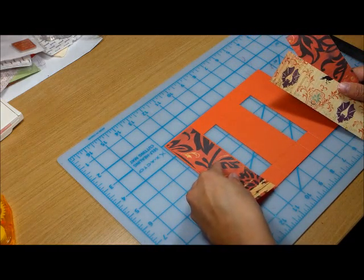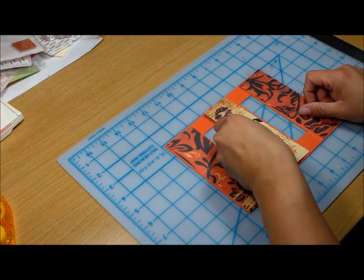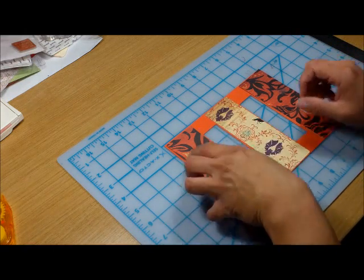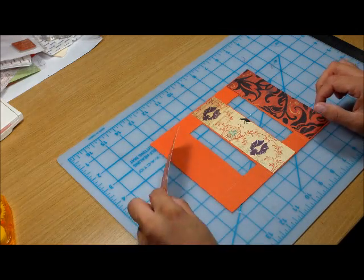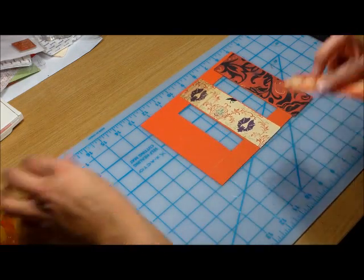So I cut a panel for here and here in the center. Keep in mind these score marks that we had here and here, they're just going to get covered up with designer paper.